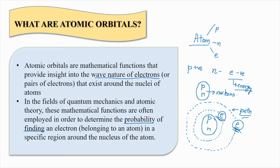If the current is getting generated, electricity is being produced which can be used by our home appliances. But to produce that particular electricity, to get into that particular current, we need to find out where exactly an electron will be. And thus having orbitals to make sure that that particular electricity is found out is important.